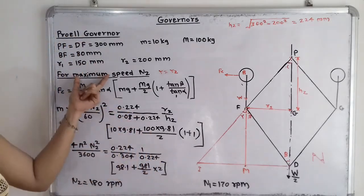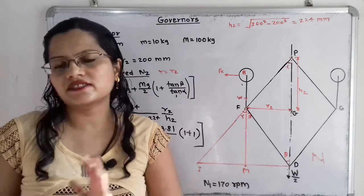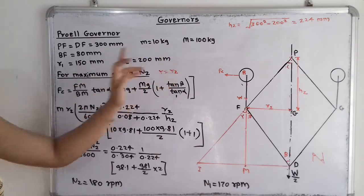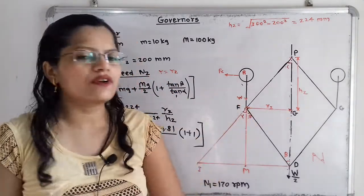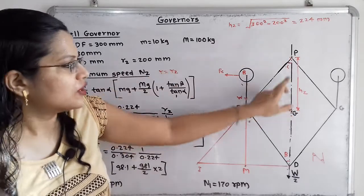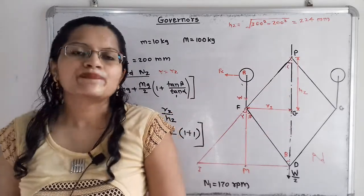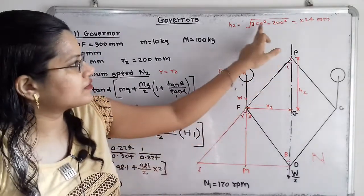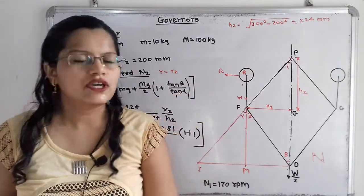Now we calculate maximum speed N2. For N2, the radius of rotation is taken as the larger value R2 = 200 mm. We calculate H2 using triangle PFG: H2 = √(300² − 200²) = 224 mm.